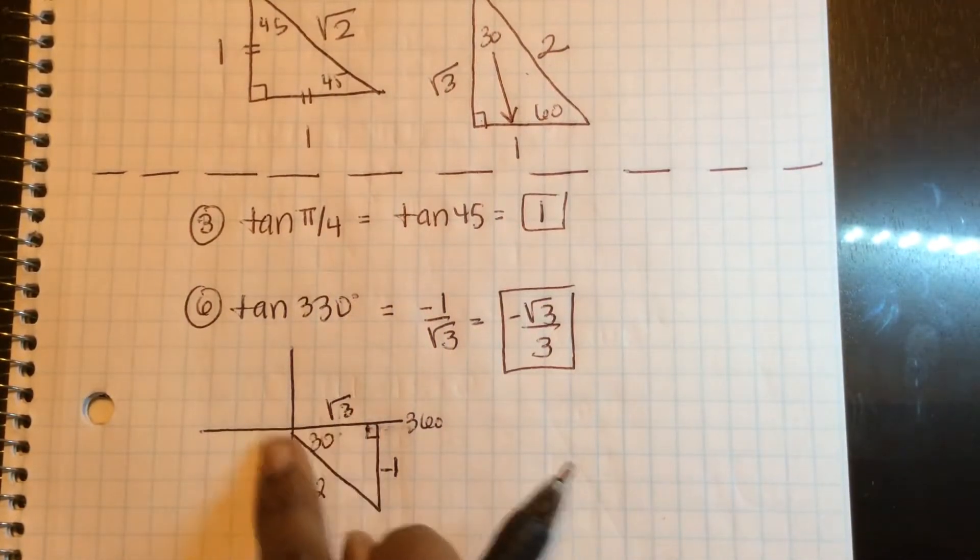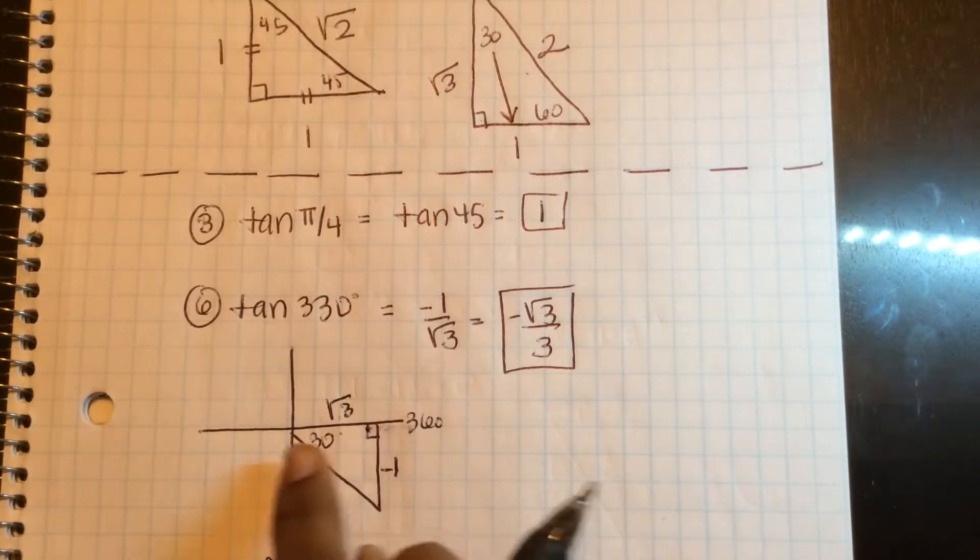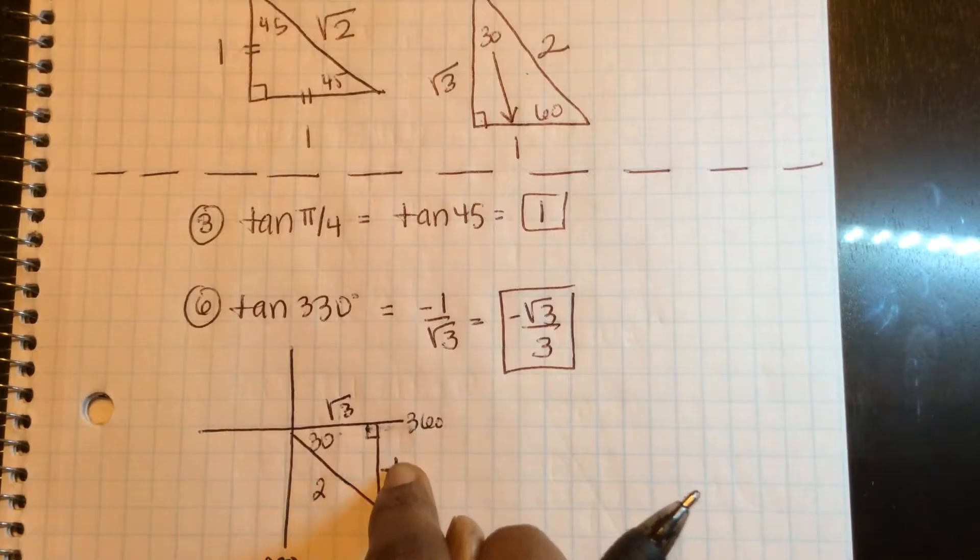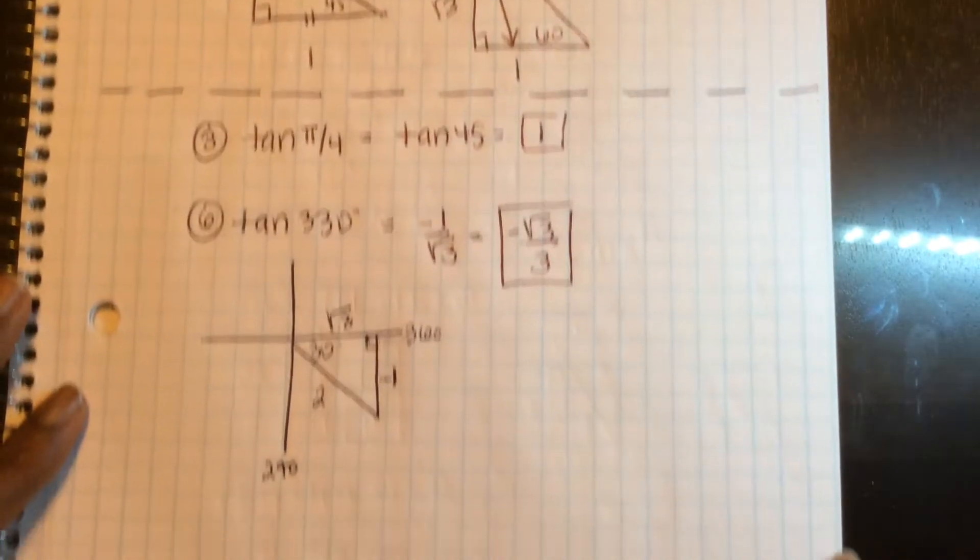So if you think about drawing that same triangle in the correct quadrant, you can figure out sine, cosine, and tangent pretty quickly.